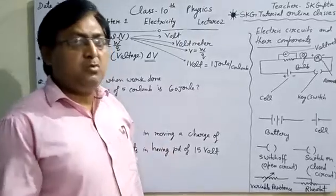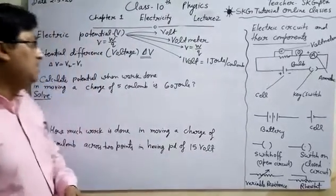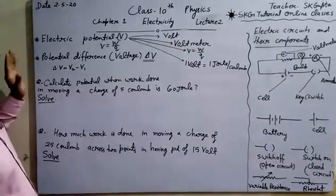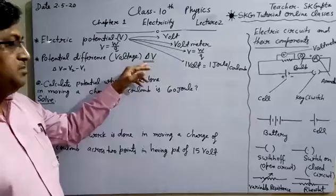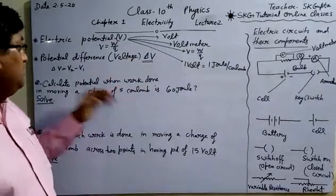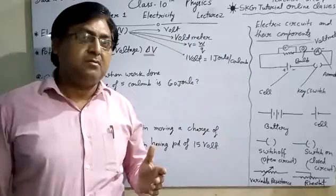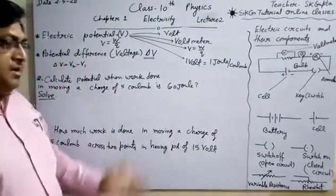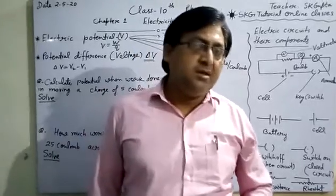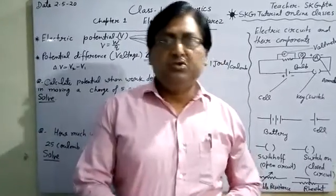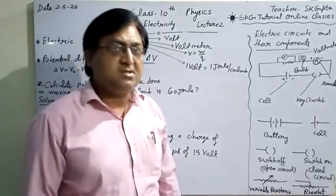Now we have to discuss what is potential difference, that is voltage. Symbol of voltage is delta V. Delta V is equal to V2 minus V1. It is defined as the amount of work done to bring a unit positive charge from one point to another point in a given circuit. This is called potential difference.